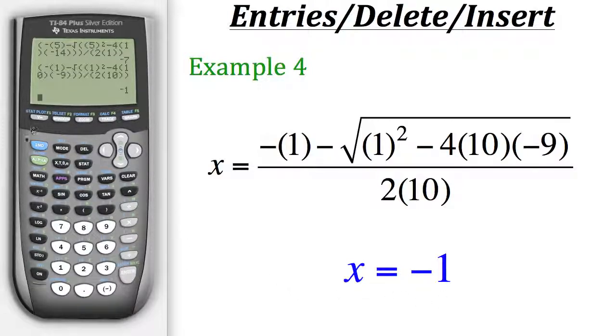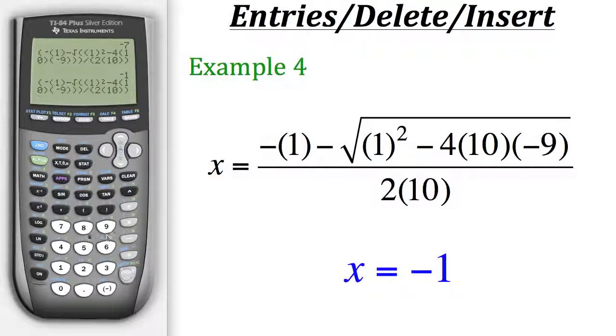And that's how you could pull up entries and manipulate them using your calculator. Now keep in mind, when you pull up an entry using second enter, you could continually do that to scroll through previous entries. But the calculator will not be able to do it forever. It will eventually cycle back through to your most recent entry.